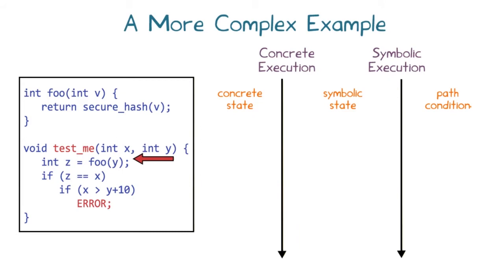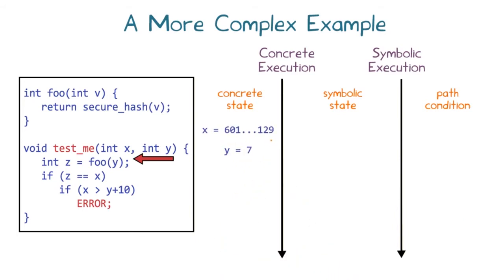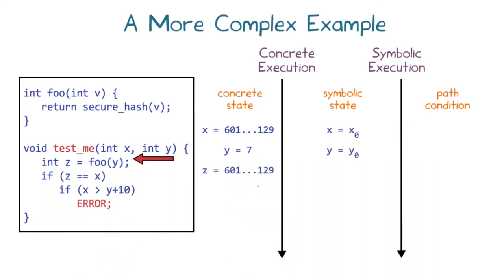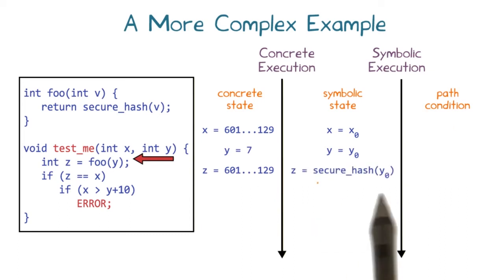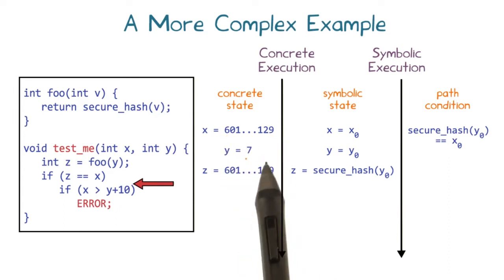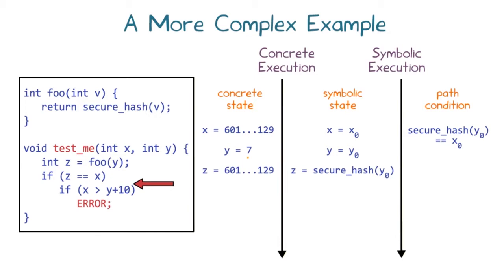DSE re-evaluates testme with x equals 601...129 and y equals 7. The symbolic state starts as x equals x0, y equals y0. Z is assigned foo of 7 — the secure hash of 7 — with symbolic value 'secure hash of y0'. At the first branch point, the concrete values of x and z are equal, so the true branch is taken. At the next branch point, the concrete values satisfy 'x greater than y plus 10', so we take the true branch again, which leads to the error.